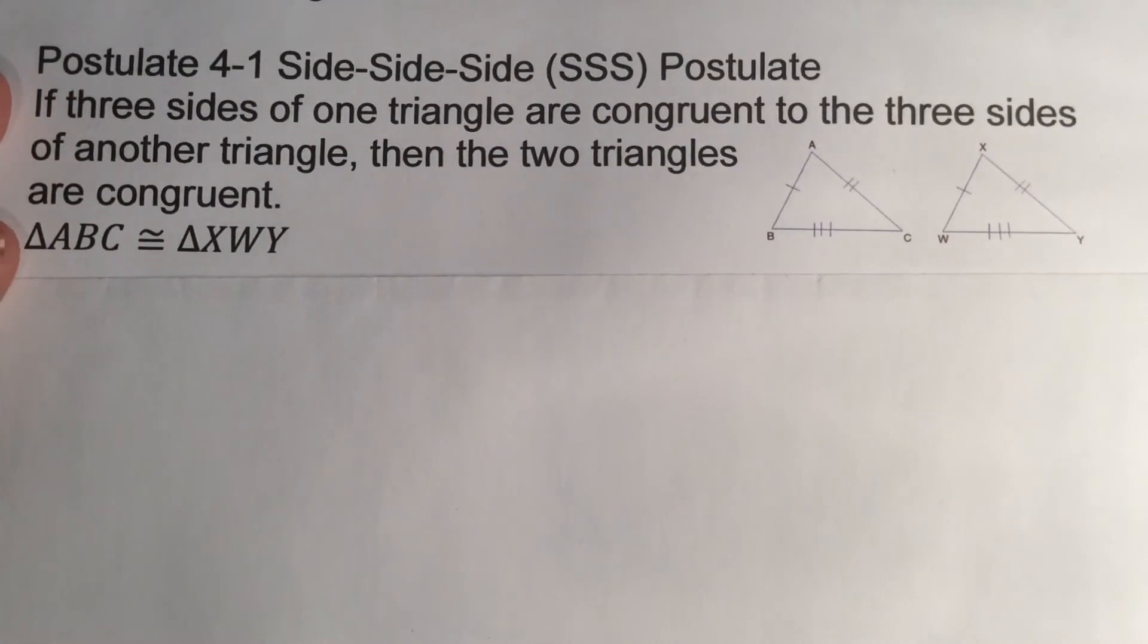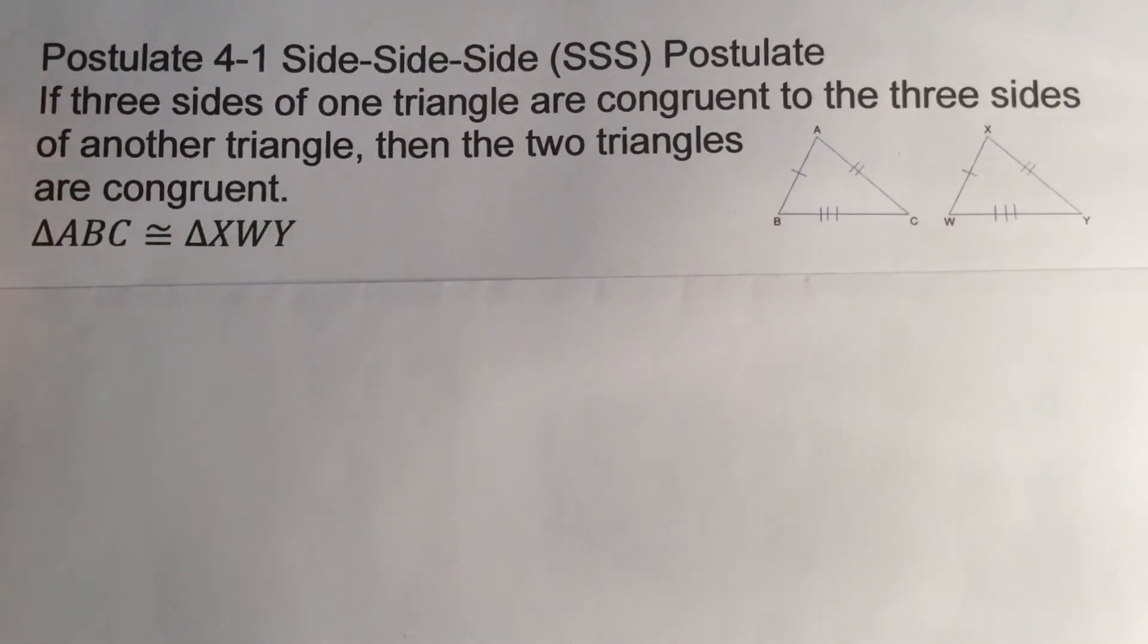When you get to using this in a proof, all you will have to put is SSS. That will represent side-side-side. What it says is if we know that we have all three sets of sides congruent, the triangles have to be congruent.